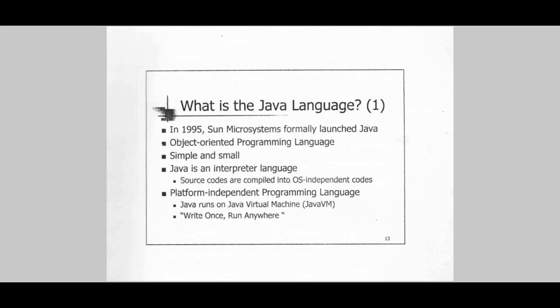We will start with a brief background of Java programming language. Java is an object-oriented programming language. It was designed by James Gosling at Sun Microsystems, which was later acquired by Oracle Corporation, and it was formally launched in 1995.